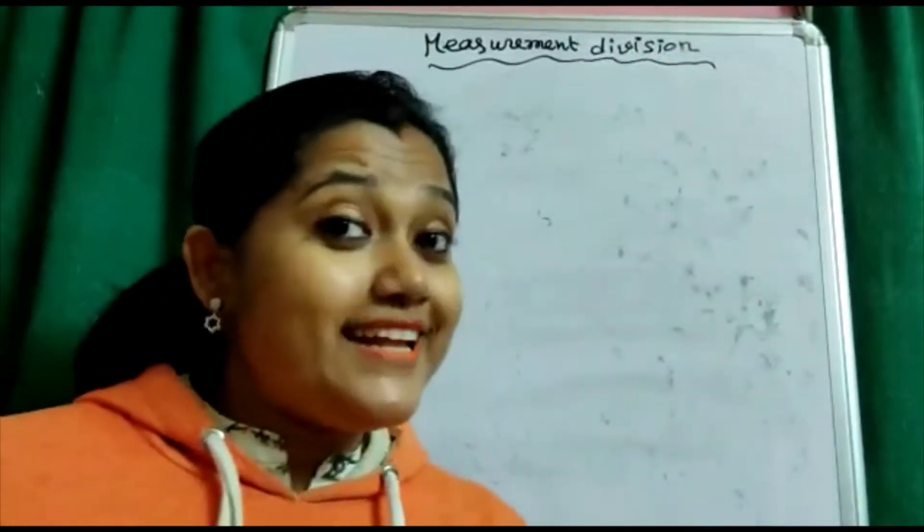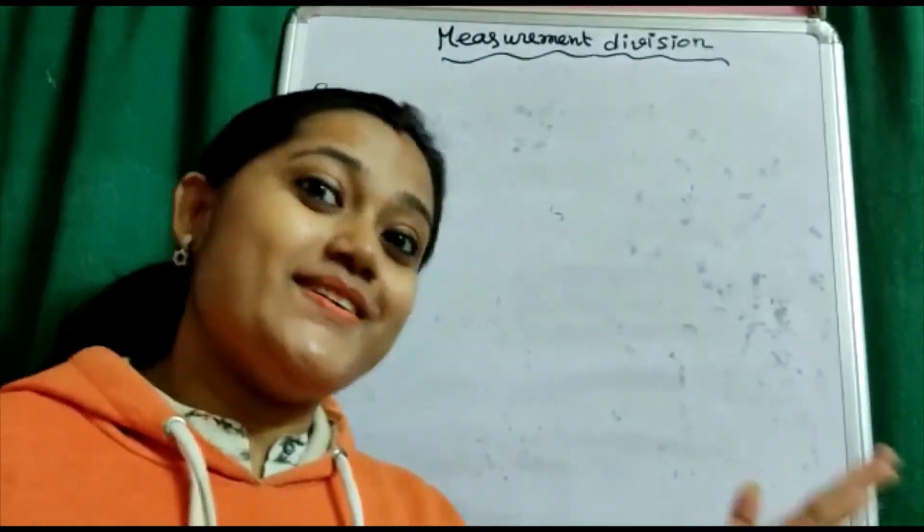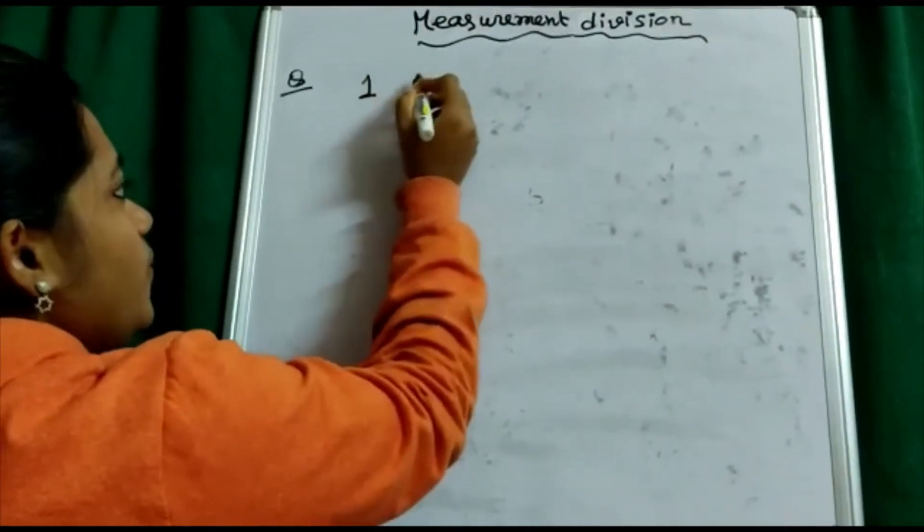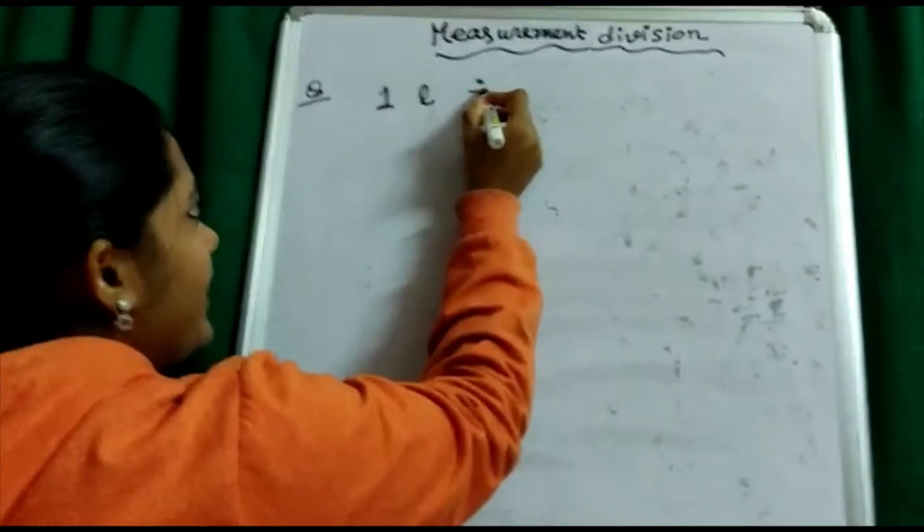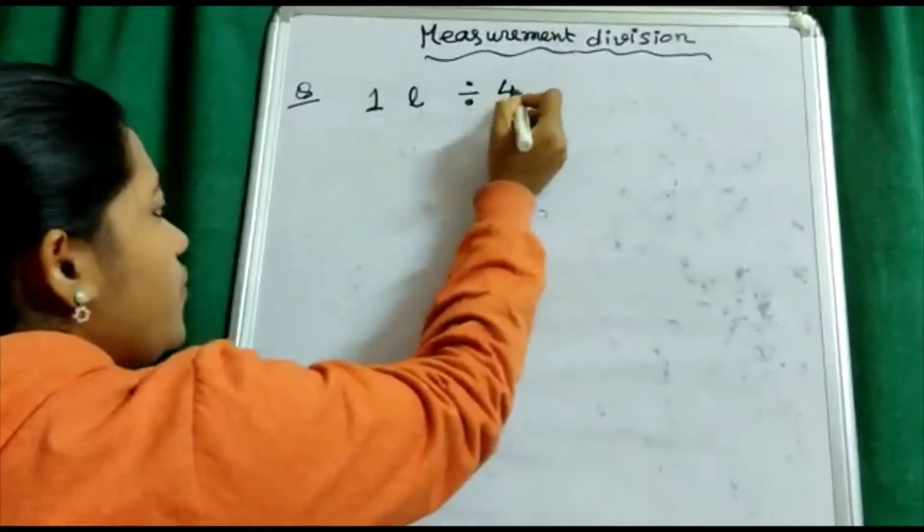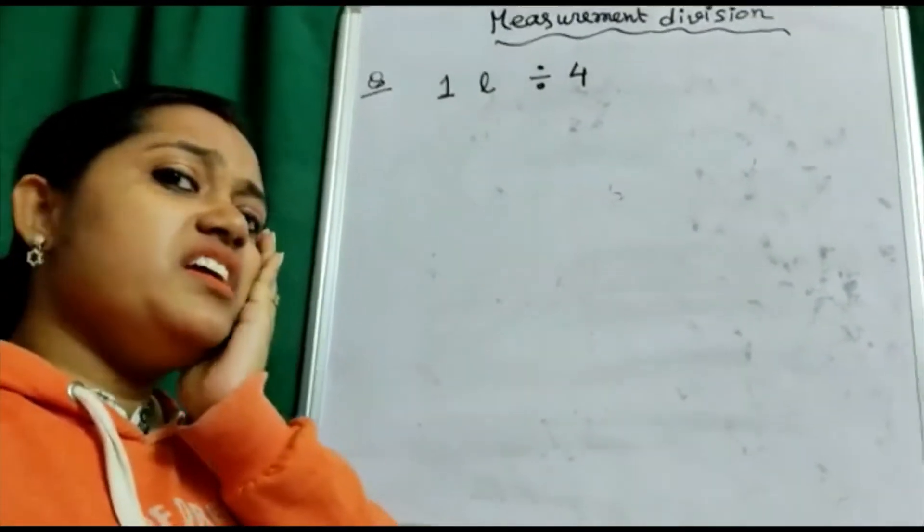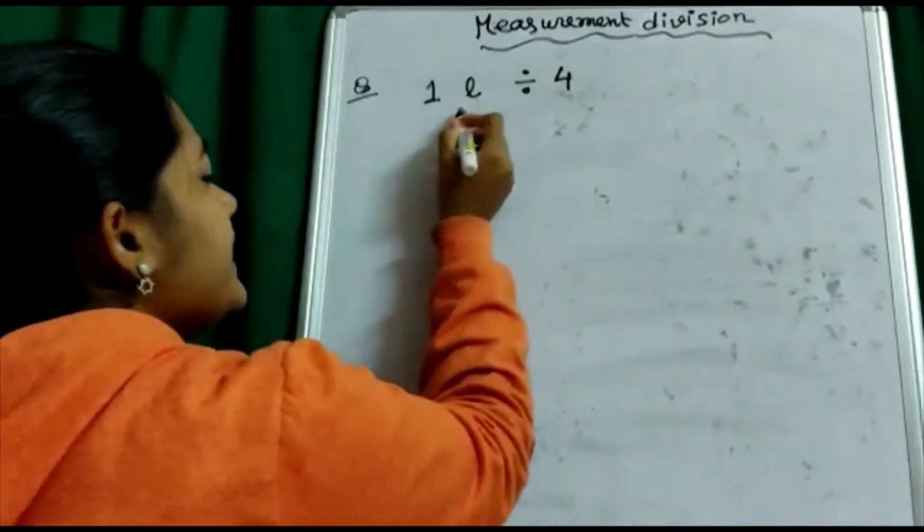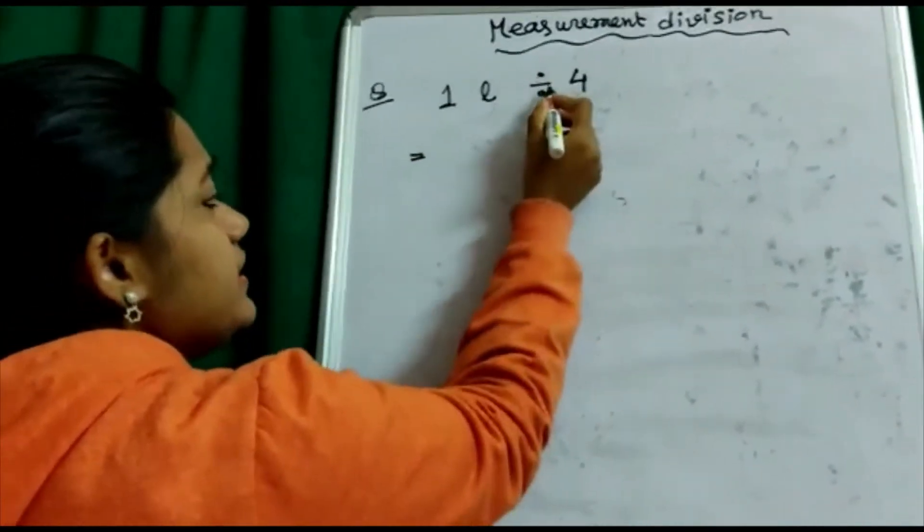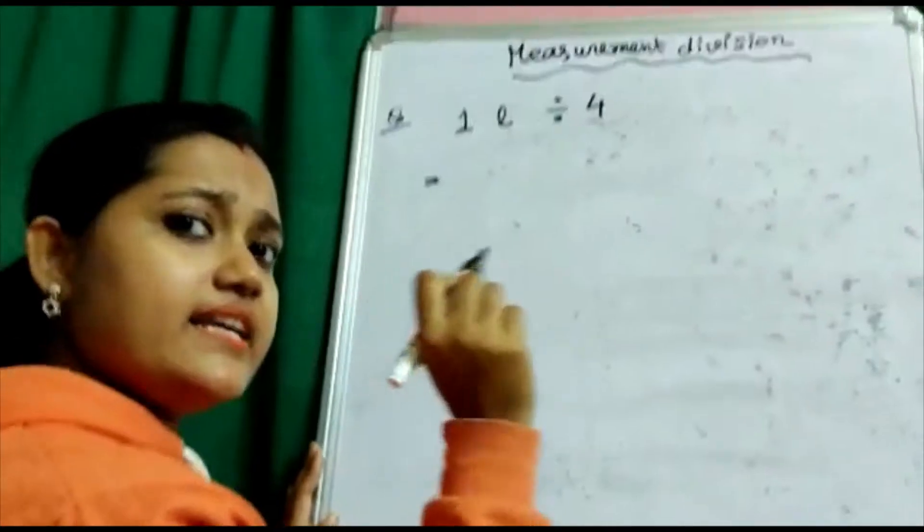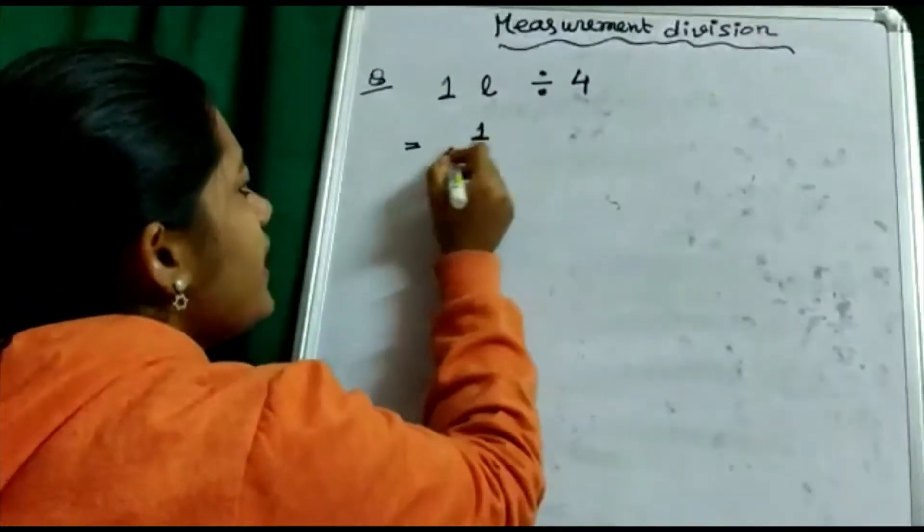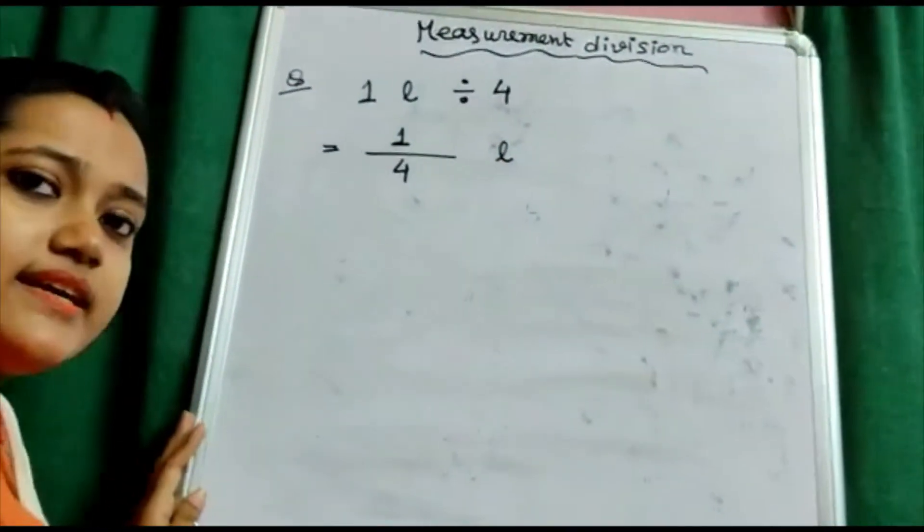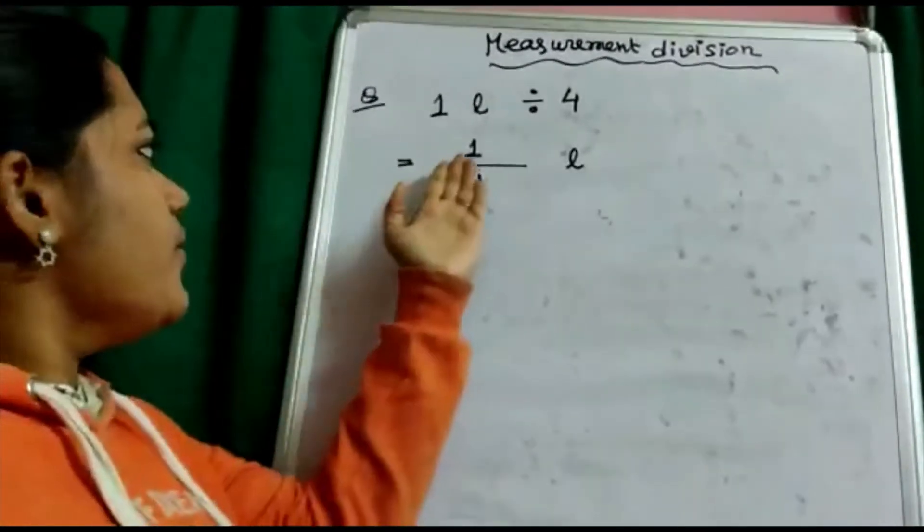We are here to solve that kind of problem. Let's start with that example. One liter divided by four. I can write it down easily in fraction form, so that is one by four, and unit only I need to write it down aside.